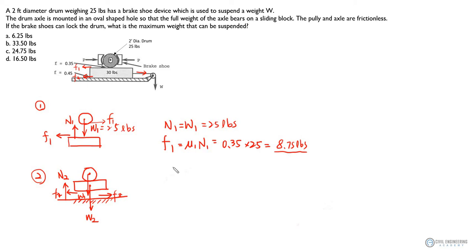and this is also F2. In this free body diagram, you will have N2 equals W1 plus W2, because you have both weights acting on this surface, so the normal force will be the combined weights of these two components. W1 plus W2 is 25 plus 30, which equals 55 pounds. Accordingly, F2 equals μ2 times N2, which is 0.45 times 55 pounds, giving you 24.75 pounds.